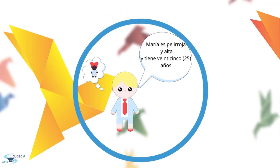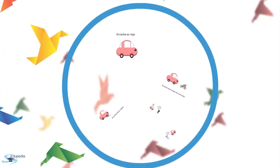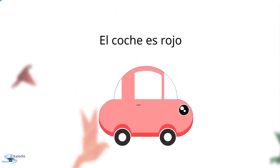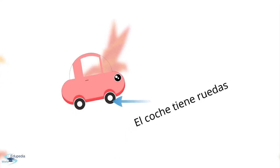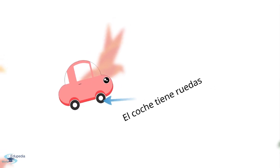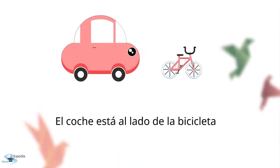Now let's take the example of an object — a car — to see the different ways of using these verbs. El coche es rojo — the car is red. We use the verb ser because we are describing it. El coche tiene ruedas — the car has wheels. We use the verb tener because this is a possession, something that the car has. El coche está al lado de la bicicleta — the car is next to the bike. Bicicleta means bicycle, al lado de means next to. We use the verb estar because we are describing the location of the car.